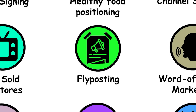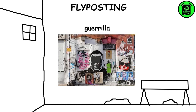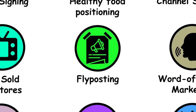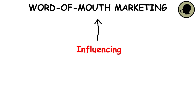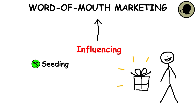Fly Posting: A guerrilla marketing tactic where advertising posters, often using wheat paste, are placed on construction site barricades, buildings, or in alleyways. Word of Mouth Marketing: Influencing or encouraging word-of-mouth advertising actively using strategies like seeding and rewarding consumers.